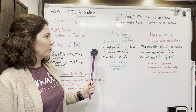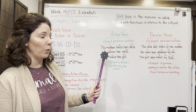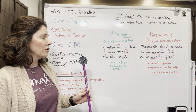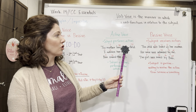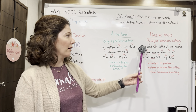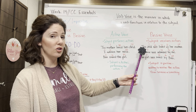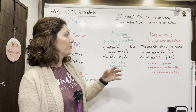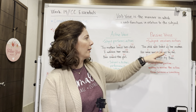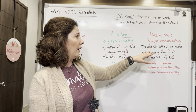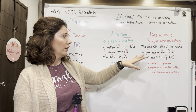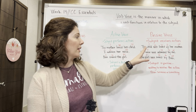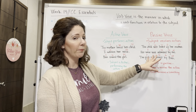Now let's look at passive examples — we've switched these sentences around to make them passive voice. 'The child was loved by her mother' — the subject is now receiving the action. 'Her voice was admired by me' — voice is now the subject and it is being admired, receiving the action. 'The girl was saved by Ben' — the girl is now the subject and she is receiving the action, being saved by Ben.